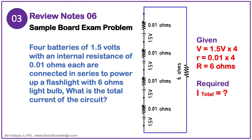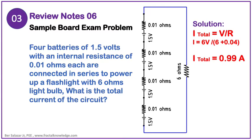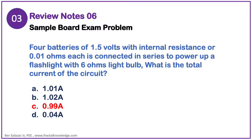The internal resistances are also in series: 0.01 times 4 equals 0.04 ohms. Since this is a series circuit, Ohm's Law formula will be used. The solution is to find the total current, which equals V over R. The total voltage is 6V, and the total resistance is 0.04 ohms internal resistance plus 6 ohms for the light bulb, giving 6.04 ohms. Therefore, our total current I is equal to 0.99 amperes. Based on our problem, the correct answer is letter C, 0.99.